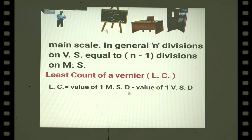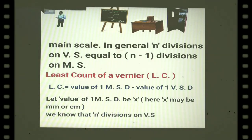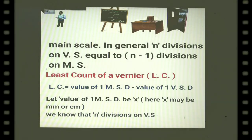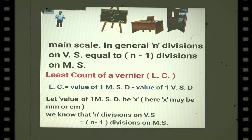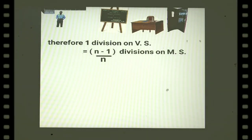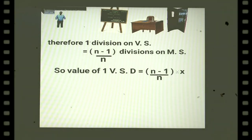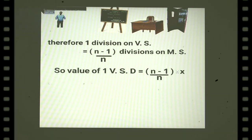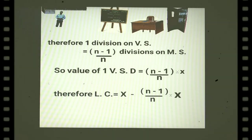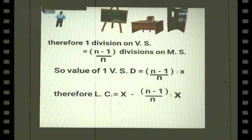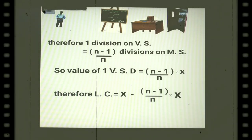The least count of a vernier is given by: value of one main scale division minus value of one vernier scale division. Let the value of one main scale division be x, where x may be in millimeter or centimeter. Since N vernier scale divisions equal N minus one main scale divisions, one vernier scale division equals (N minus one) divided by N, multiplied by x. Therefore, least count equals x minus (N minus one divided by N) times x.